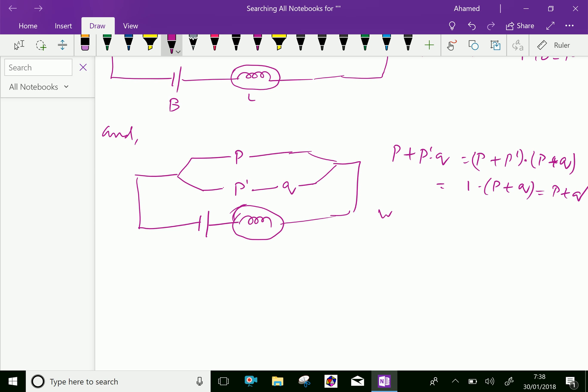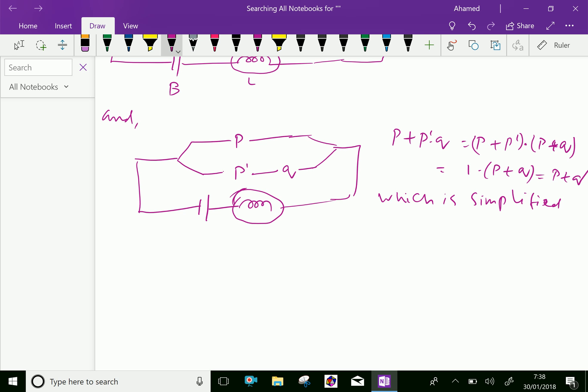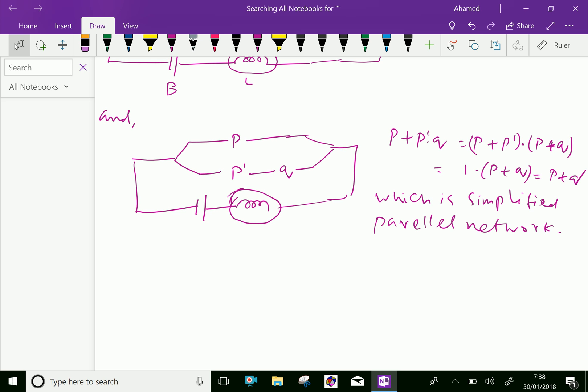Now which is simplified to parallel network. So this complete little complex circuit is simplified by parallel network by using this circuit. So this we are done.